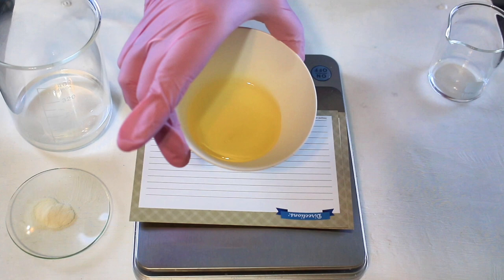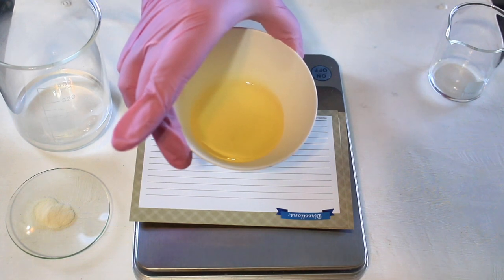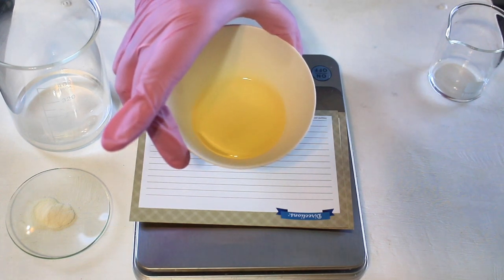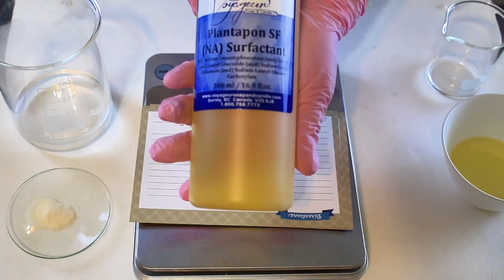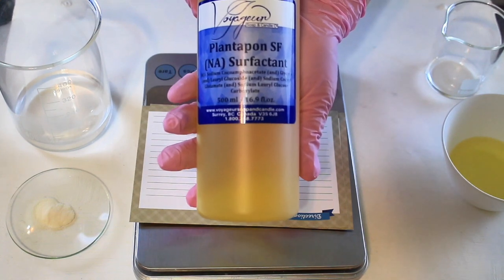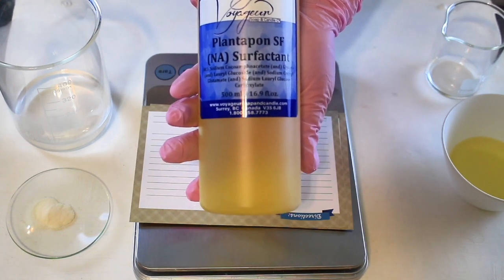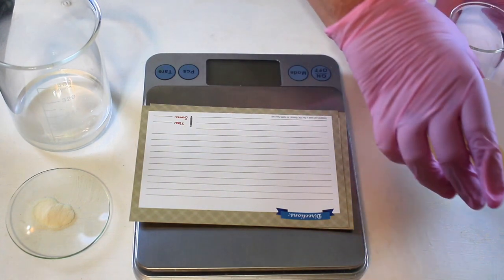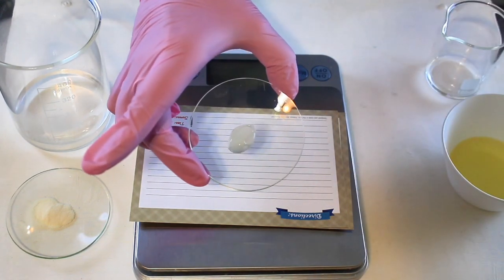This is a mixture of some very mild surfactants—actually there are five in here. You could actually just use this surfactant and add water, and you would have a very nice hand wash. We'll be using Lamesoft PO 65.